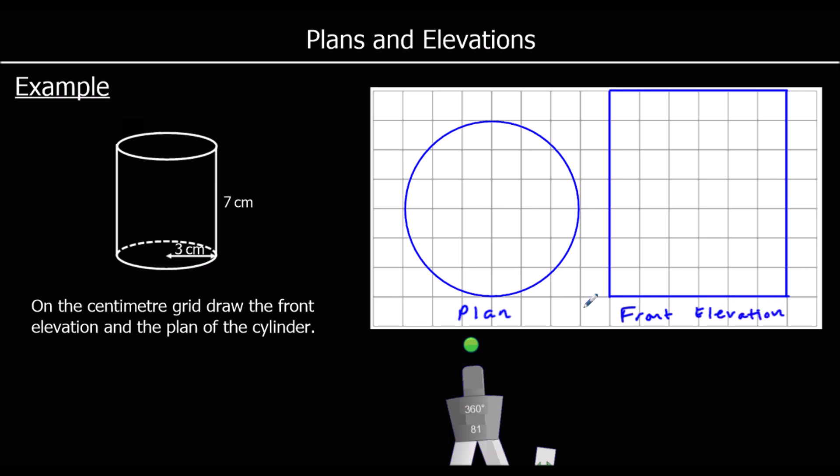So from the top we can see a circle with a radius of 3 centimetres, and from the front — if we looked at this from the front — we can see a rectangle with a height of 7 centimetres and 6 centimetres across.